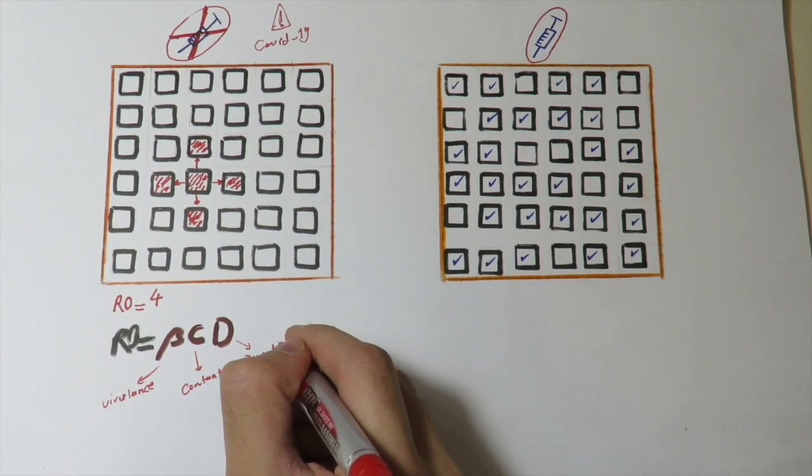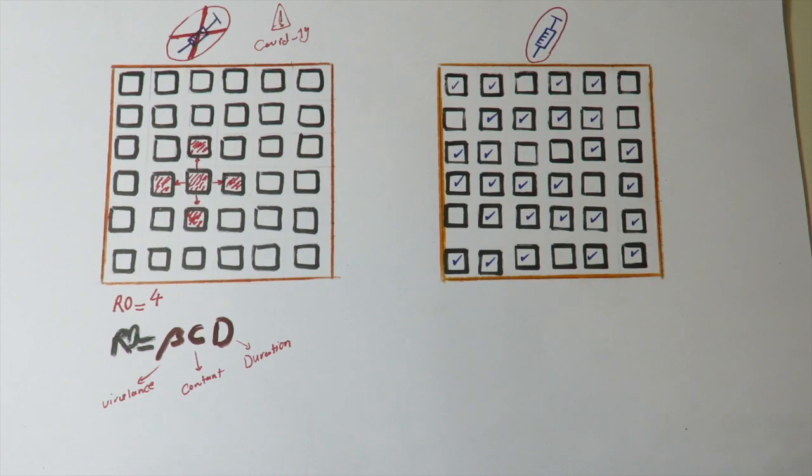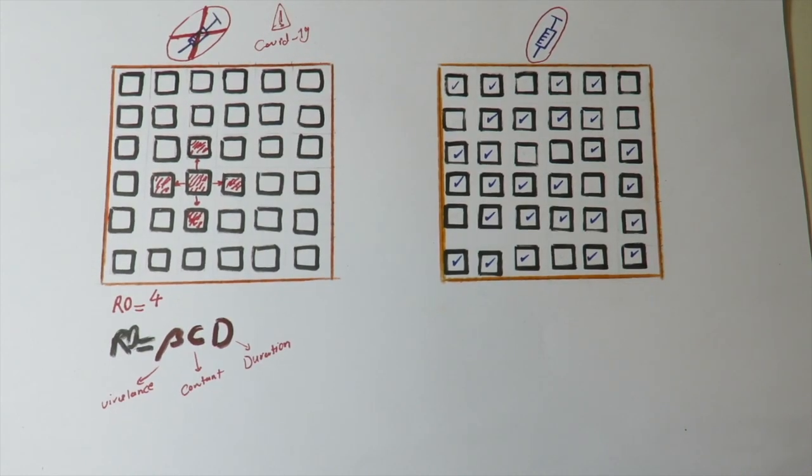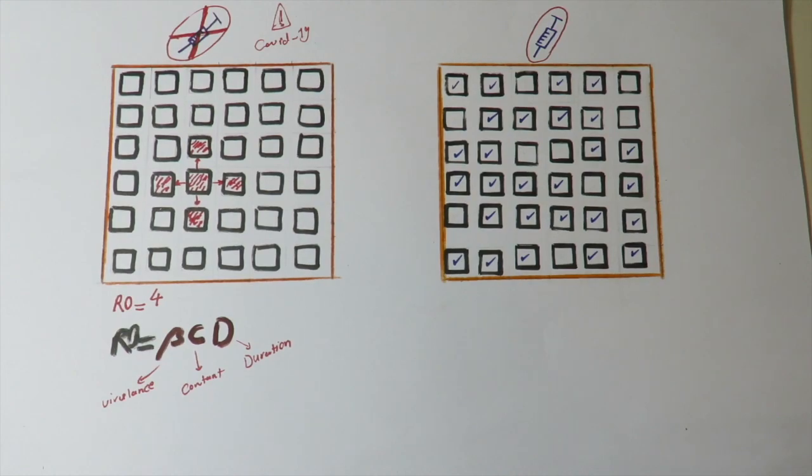If the virus is more virulent, it will be more likely to afflict more people, so the R0 will be higher. If people are more in contact with each other, the Basic Reproductive Rate will be higher. And if the duration of the disease is longer, the people afflicted by a single index case will also increase. For example, a hypothetical virus which infects people for ten days is much more likely to infect more people than another virus which infects people only for three days.